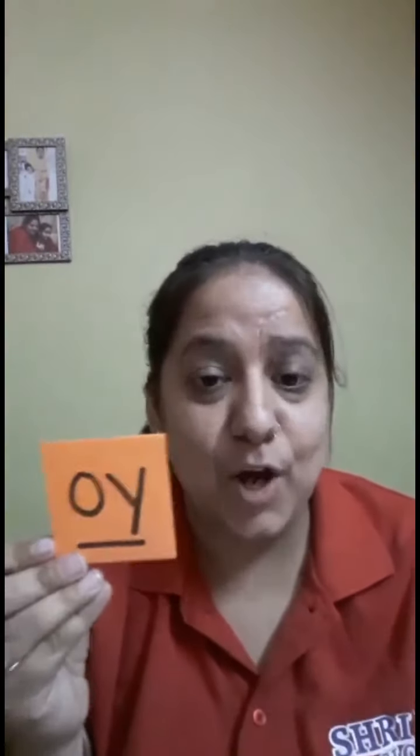Now we are going to do a writing of OI. Are we all ready? Everybody will show me their imaginary pencils and we are going to start. All around the orange. Down the horn. Up the horn. Down the head. Let's do it once again. All around the orange. Down the horn. Up the horn. Under the head. Very good.